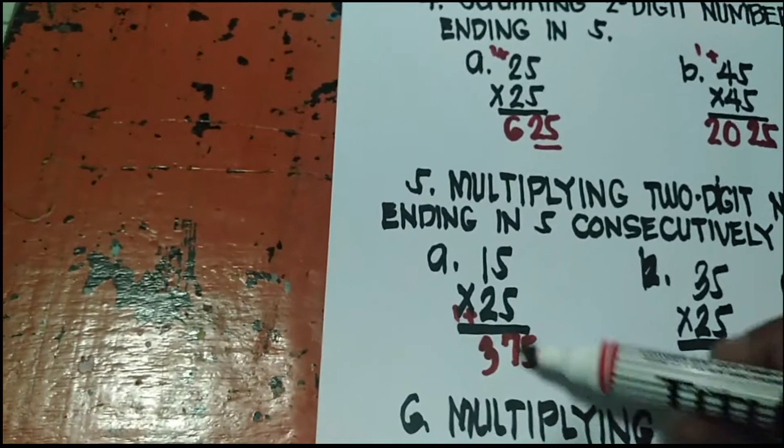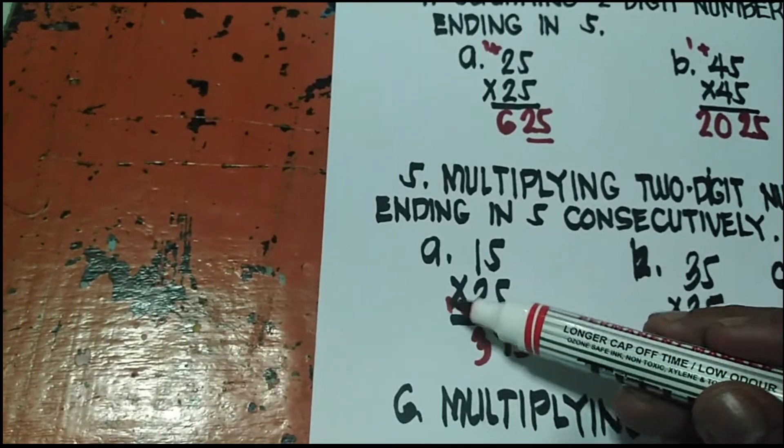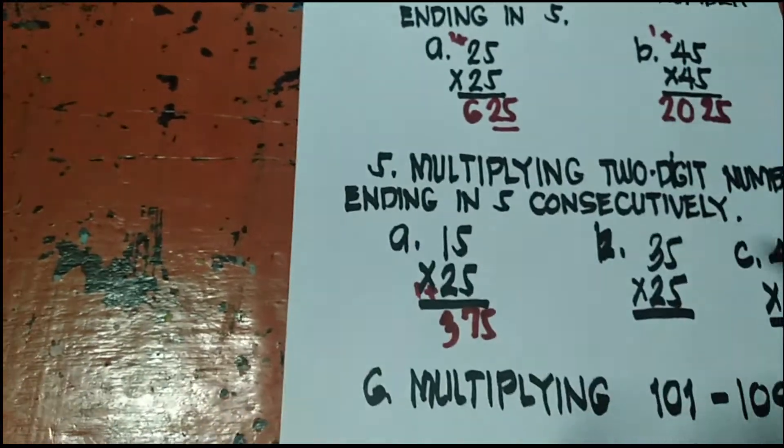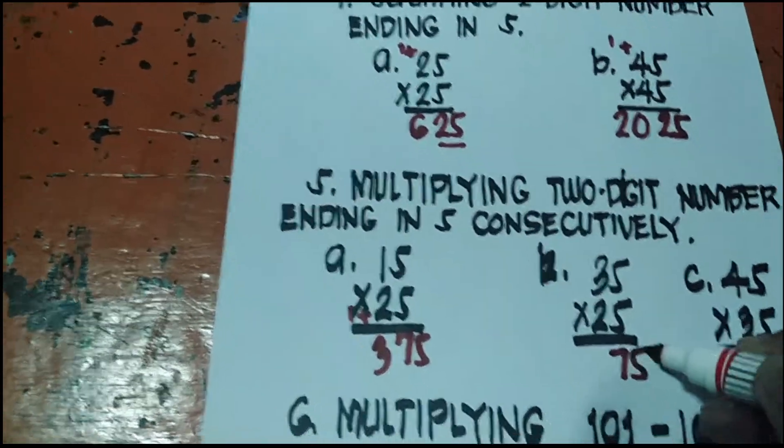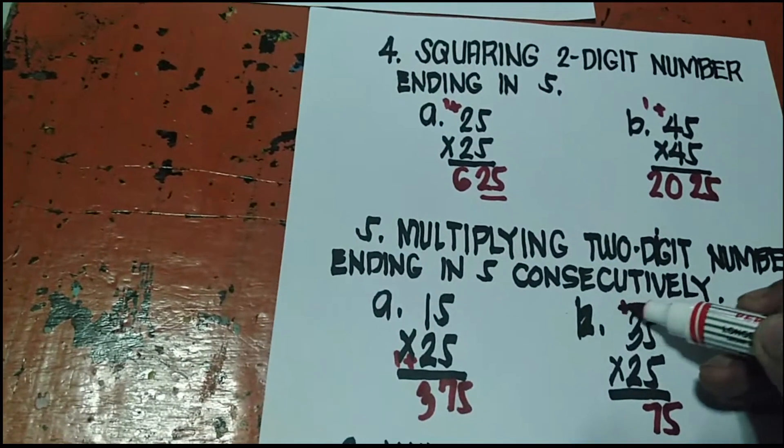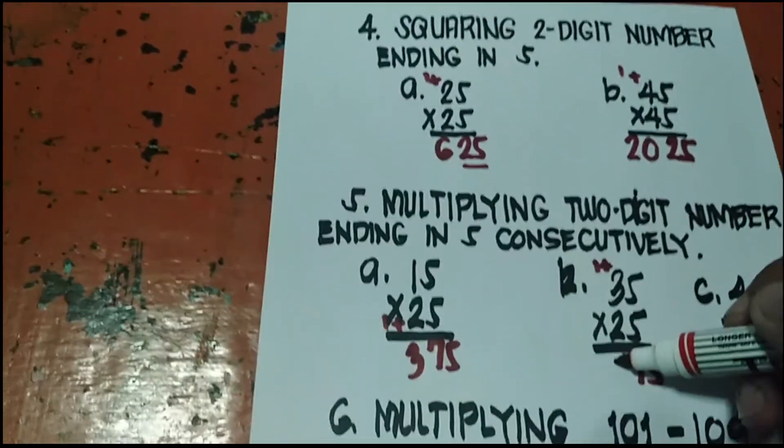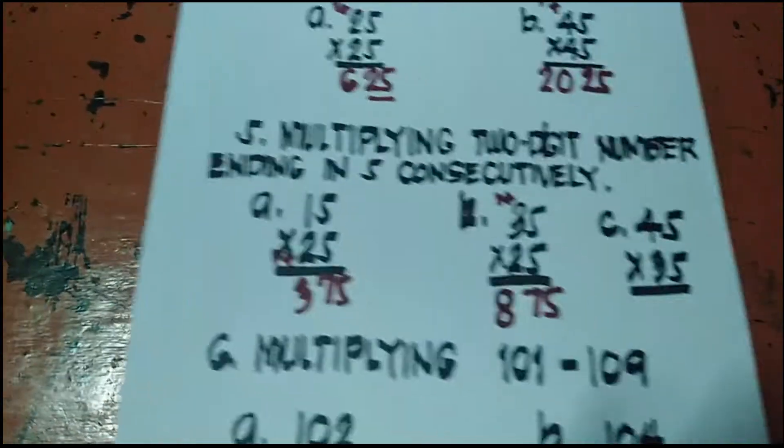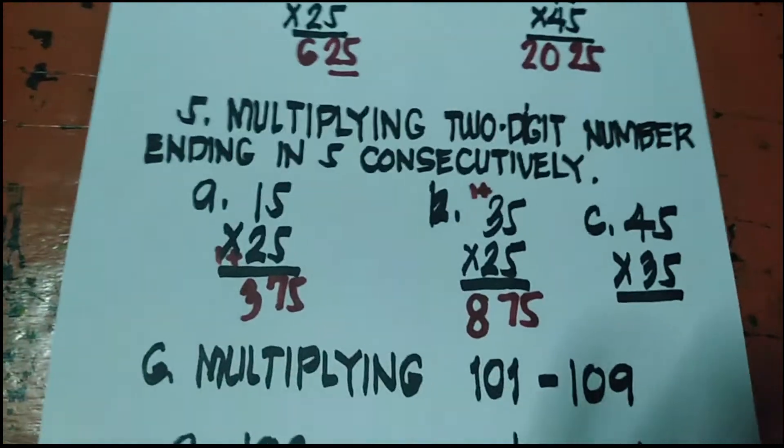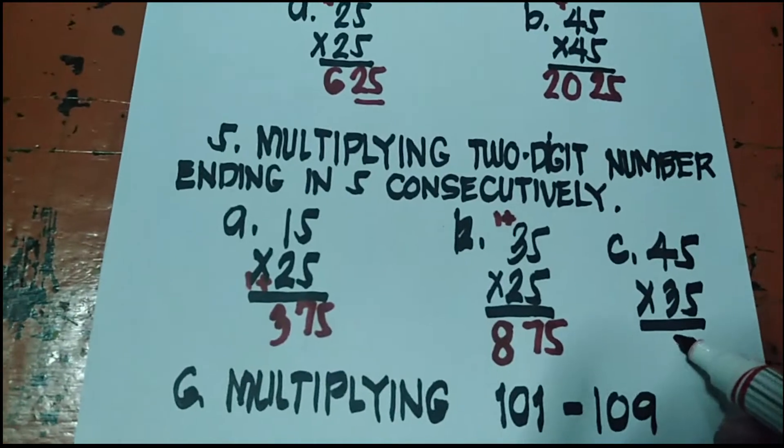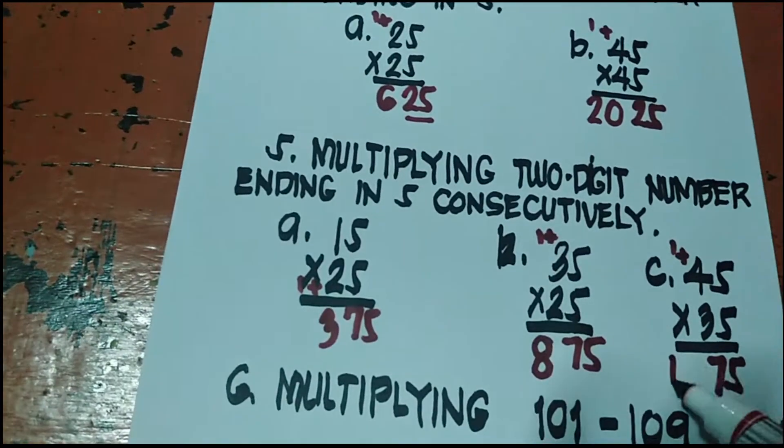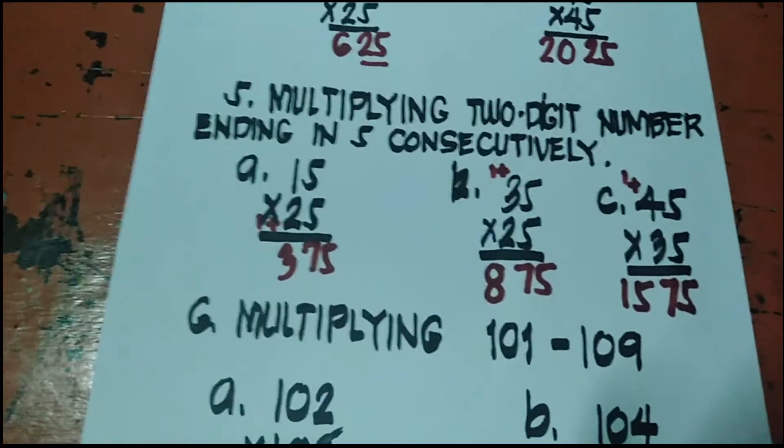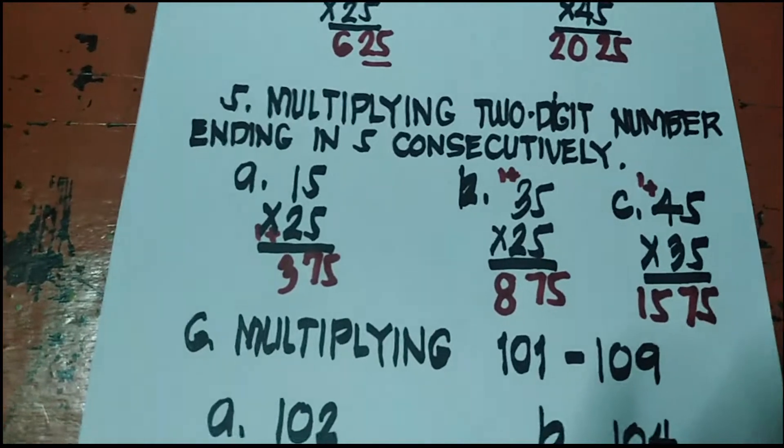Ulitin ko, always 75. Tapos dito mag-plus 1 ka doon sa malaking number. 2 plus 1 is 3 times 1 is 3. Another example. 35 times 25, always 75. Mag-plus 1 ka doon sa mas malaki. So 3 plus 1 is 4 times 2 is 8. So 875. 45 times 35, always 75, plus 1 to the higher number. So 4 plus 1 is 5 times 3 is 15. So the answer is 1,575.